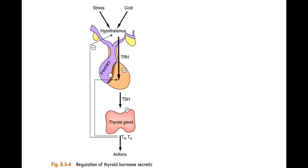TSH acts on the thyroid gland. The two main steps stimulated by TSH are iodide trapping and the oxidization of iodine. So when there is stress or cold, T3 and T4 decrease, the hypothalamus releases TRH, which stimulates the anterior pituitary to release TSH, which acts on the thyroid gland to release T3 and T4, producing all the required actions.